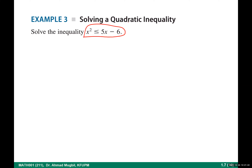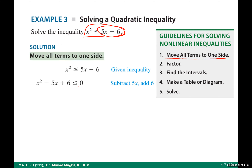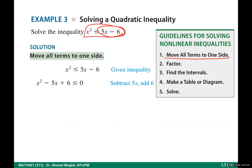Let's take an example — this is a quadratic inequality. Step 1: move all terms to one side. We move these two terms to the left-hand side. Why is this step important? Because I need to know when this expression is negative or positive.